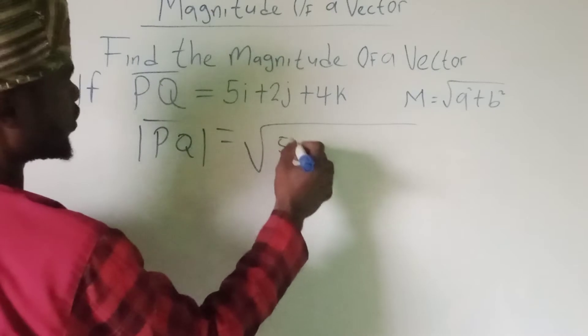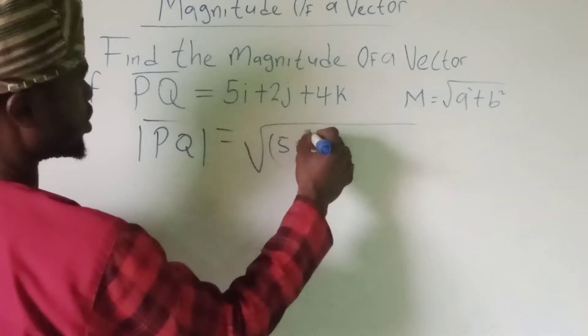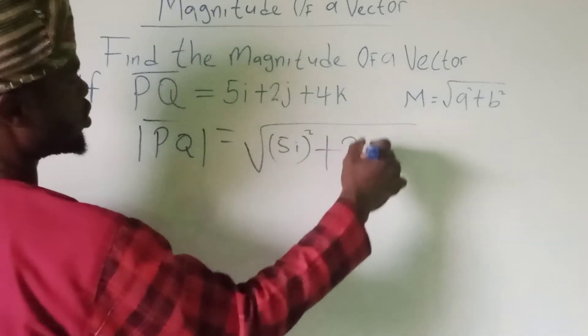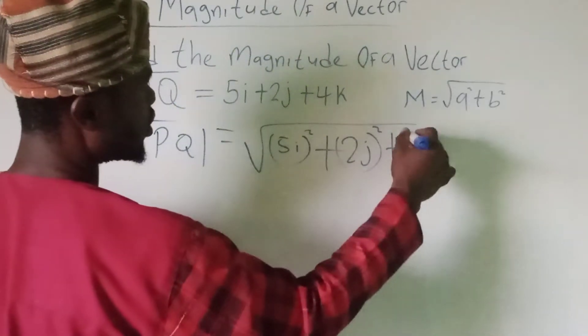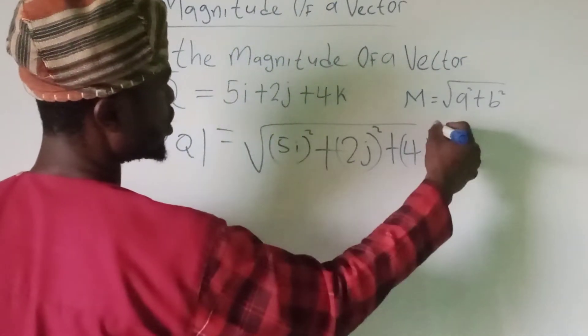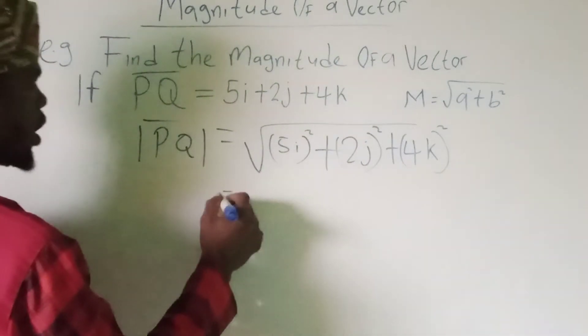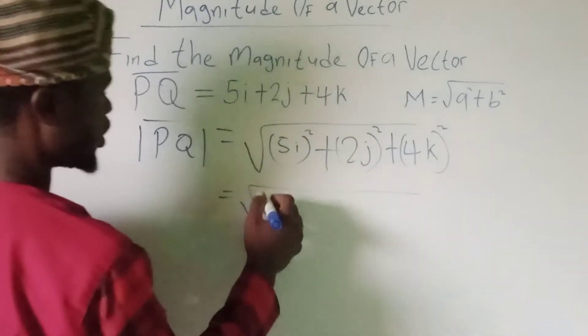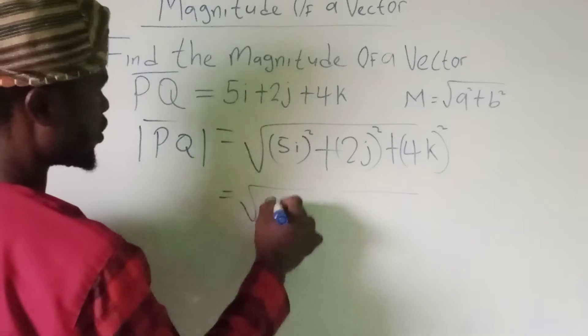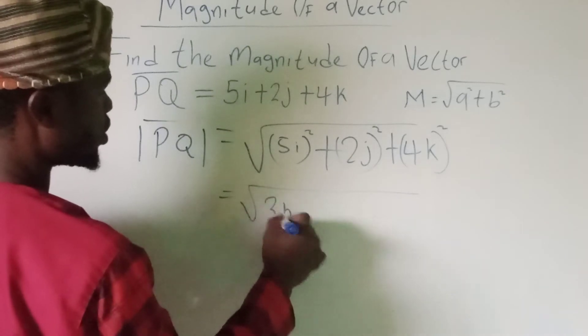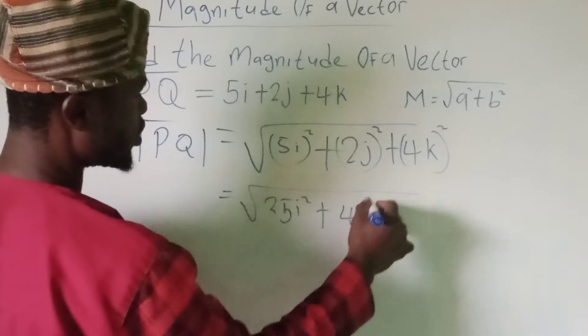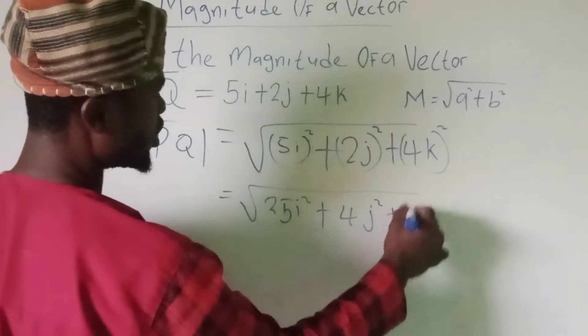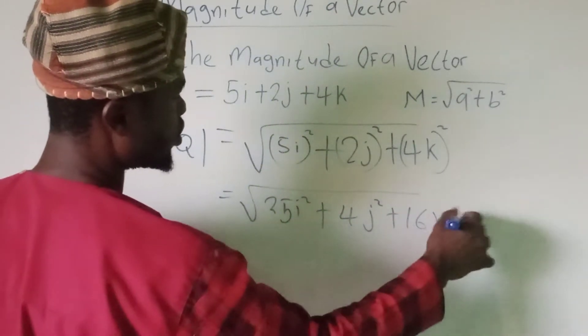5I squared plus 2J squared plus 4K squared. So now equal to square root of 5 squared is 25I squared plus 4J squared plus 16K squared.